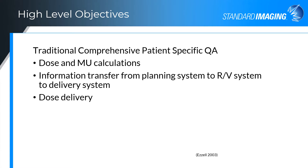Today's LINACs and treatment planning systems have come a long way, and QA needs have evolved to match the progress. I pulled QA criteria from a 2003 publication entitled Clinical Implementation of IMRT. This document states that a comprehensive patient-specific QA program should focus on dose and monitor unit calculations, information transfer from planning system to record and verify system to delivery system, and finally, dose delivery. Today, this is still the place to start.